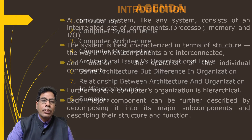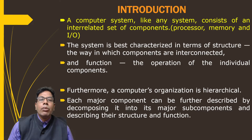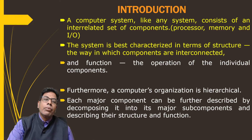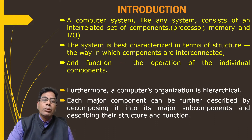A computer system, like any system, consists of an interrelated set of components. In the case of a computer system, we have the processor, memory, and input/output devices, which are connected to each other. The system is best characterized in terms of structure — the way in which components are interconnected — and function, that is the operation of the individual components.